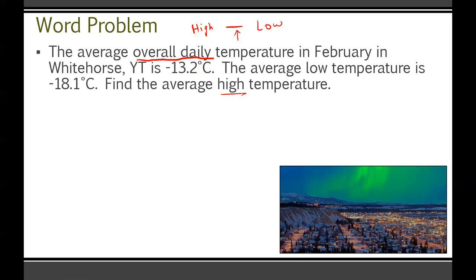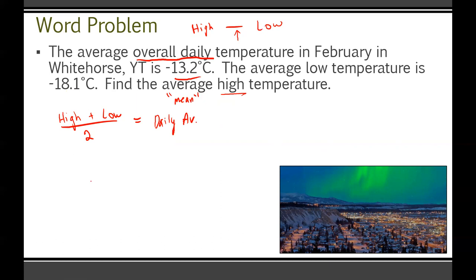The overall average daily temperature is the midpoint between the high and the low. The formula is: (high + low) divided by 2 equals the daily average. We know the daily average is negative 13.2, and the low is negative 18.1. Let H represent the average high temperature, so the equation is (H + (negative 18.1)) / 2 = negative 13.2.